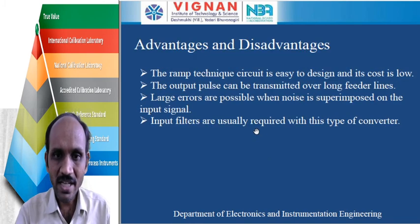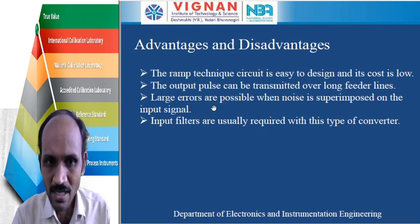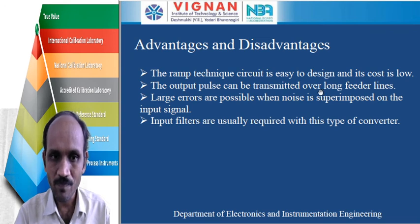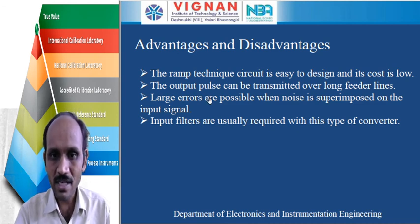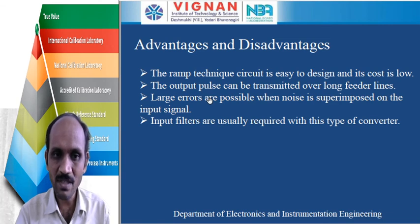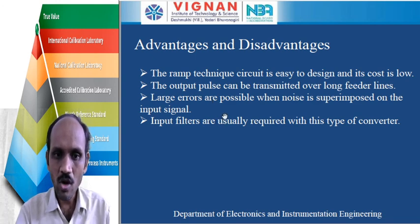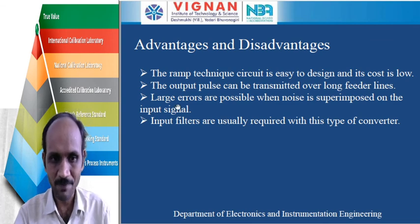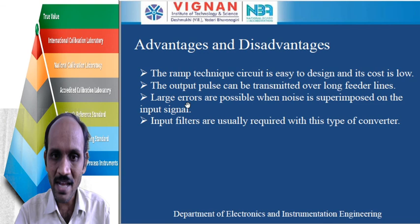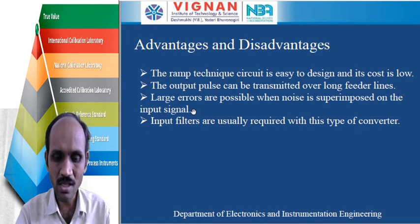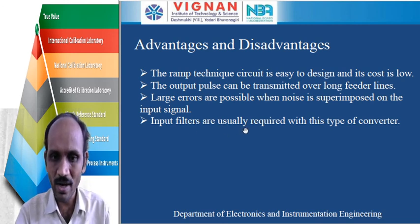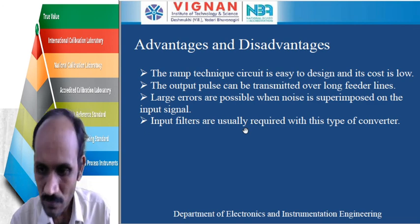The advantages and disadvantages of the ramp type DVM: the circuit is easy to design and its cost is low. The output pulse can be transmitted over long feeder lines. However, large errors are possible when noise is superimposed on the input signal. To overcome this noise, input filters are usually required with this type of converter.